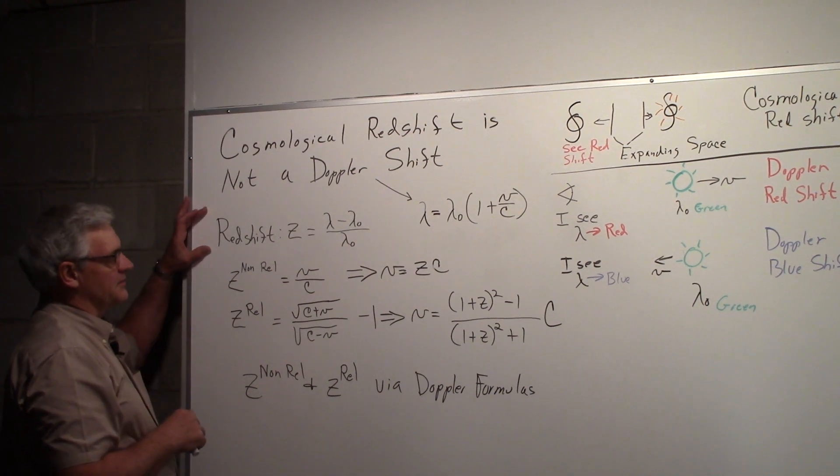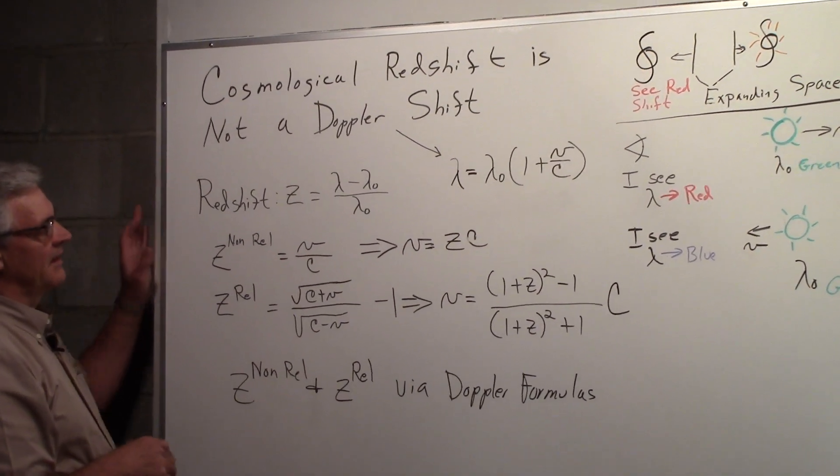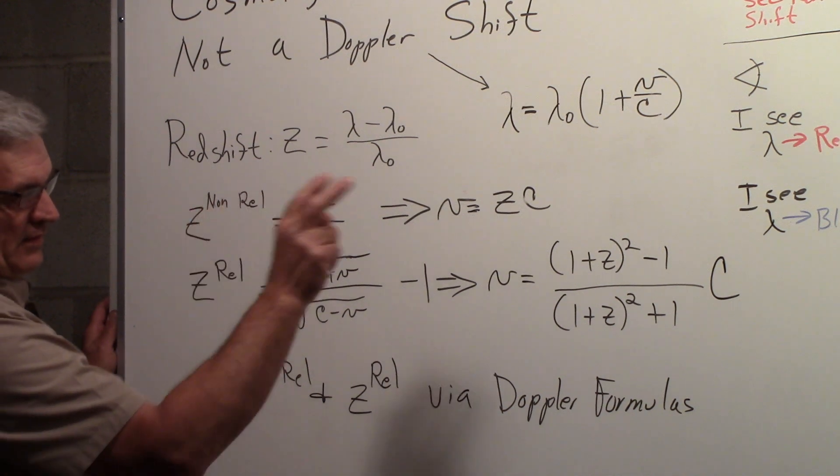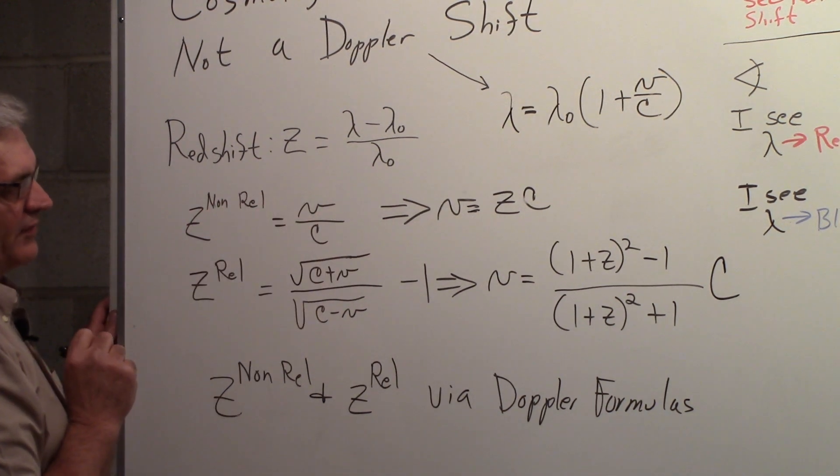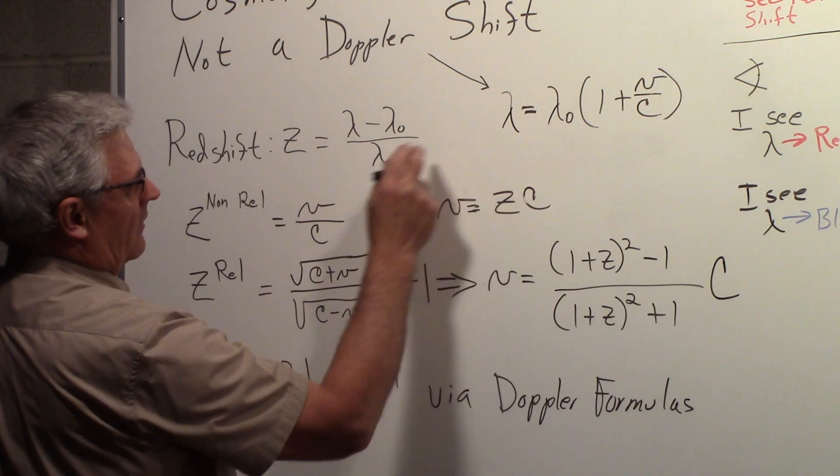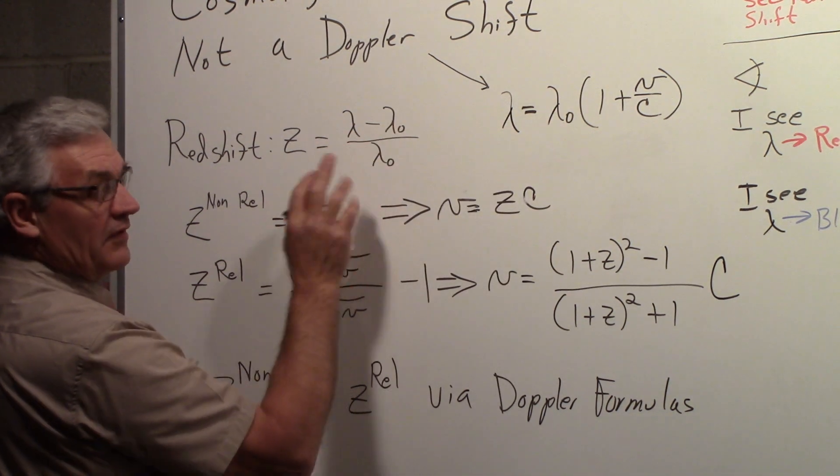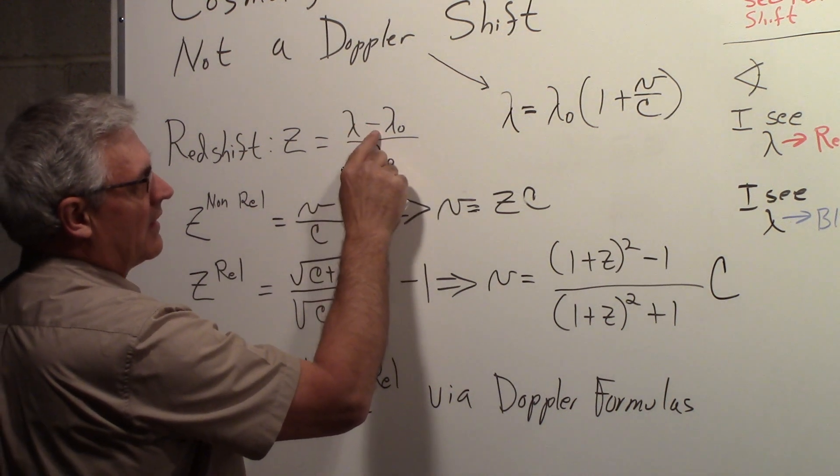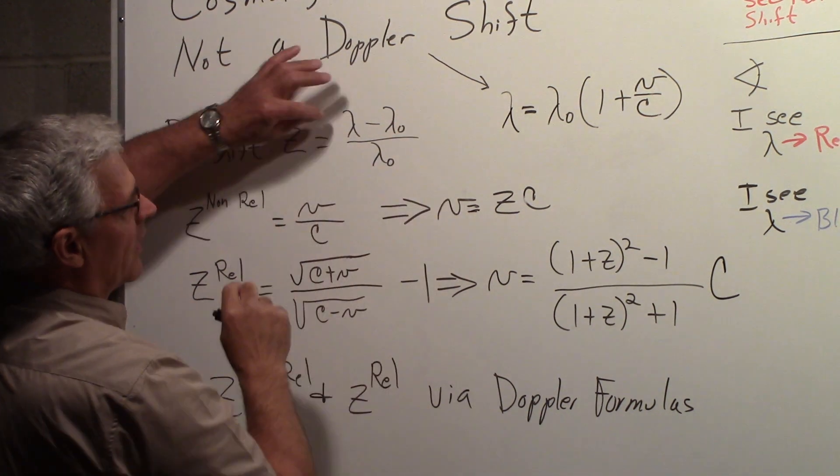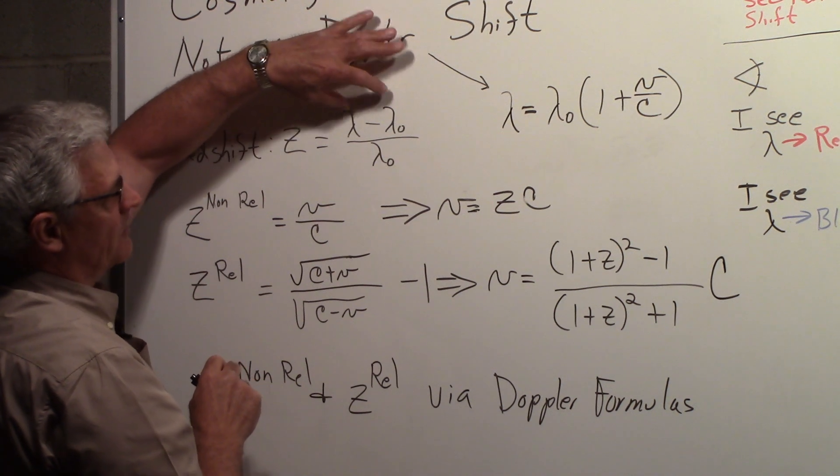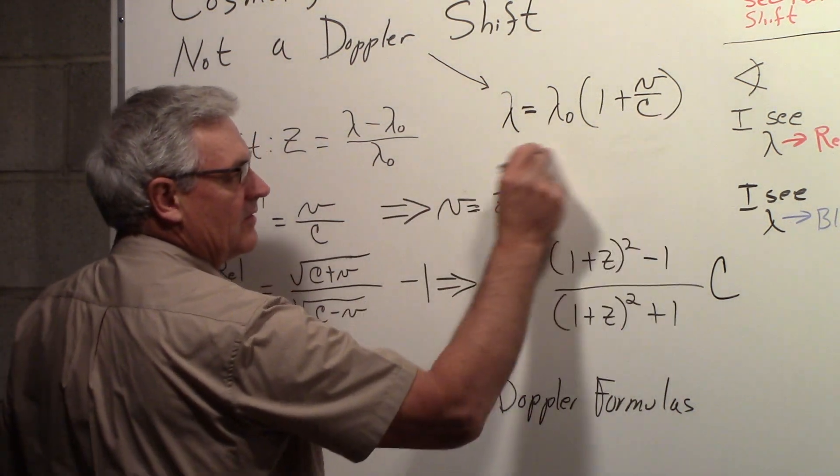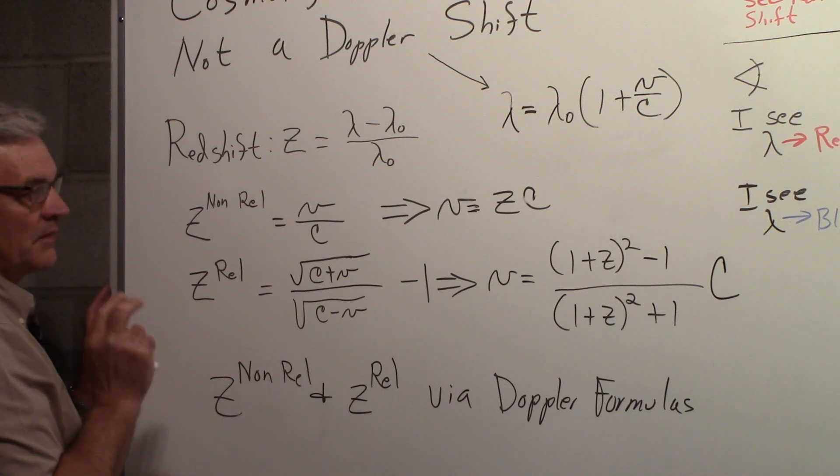Now there is a parameter z, which is called the redshift, and that is equal to (λ - λ₀)/λ₀ in reference to those lambdas that we have over there. So if we use this formula in here, we'll have λ₀ here, here they cancel. We're left with (1 + v/c) - 1. The ones cancel, so we're left with v/c. And that is a non-relativistic formula for the Doppler shift in terms of wavelength.